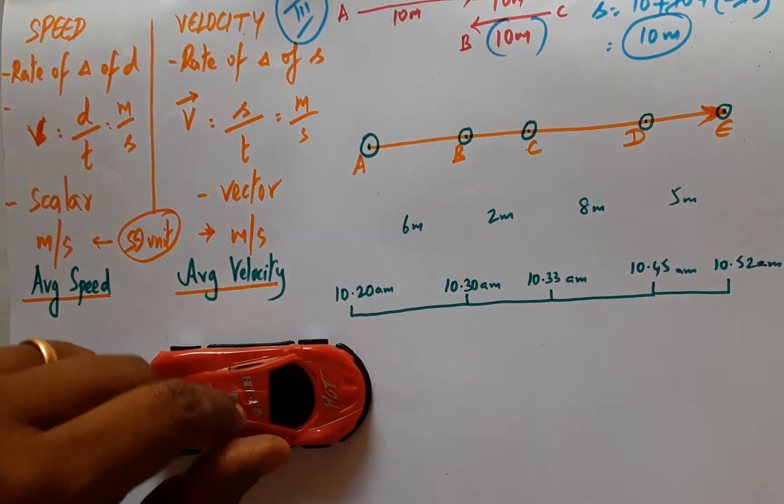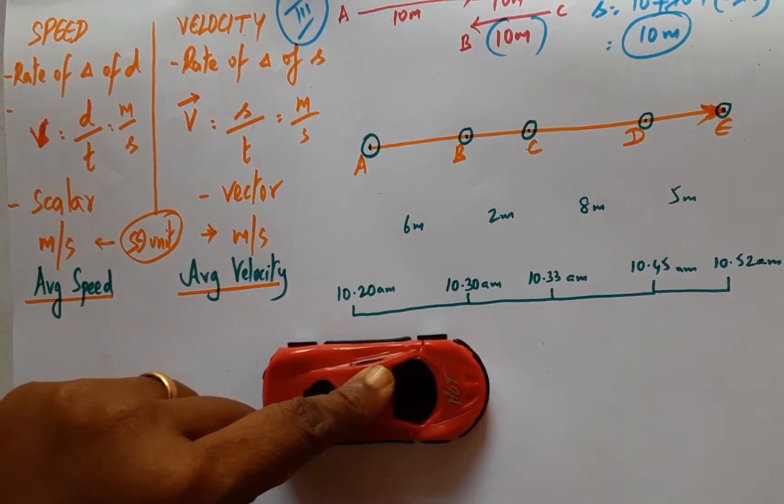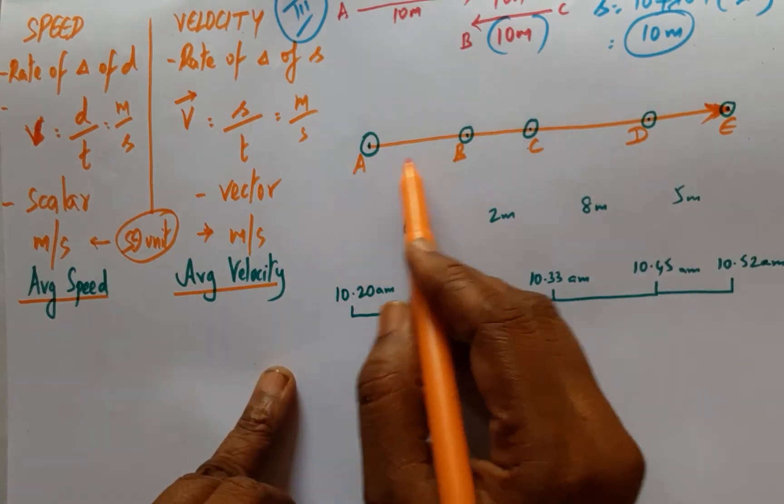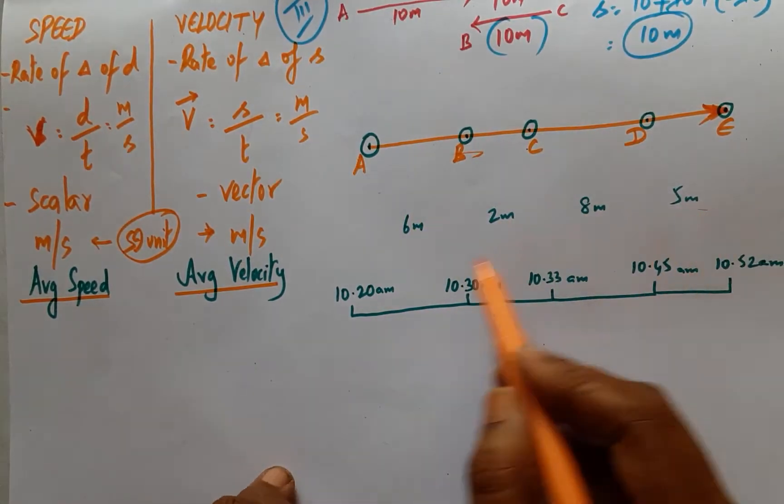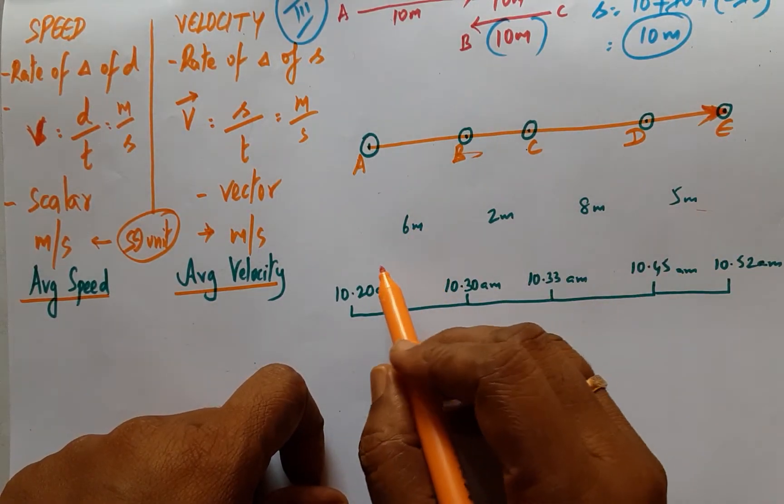Average speed and average velocity concept. A body has started at point A and travelled to point E, travelling different distances at different periods of time. But since the motion is in a straight line, distance will be equal to displacement.